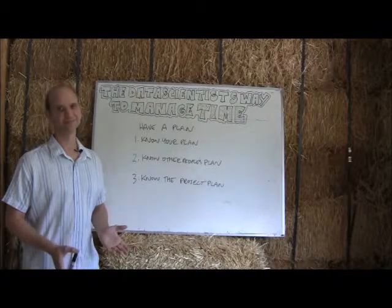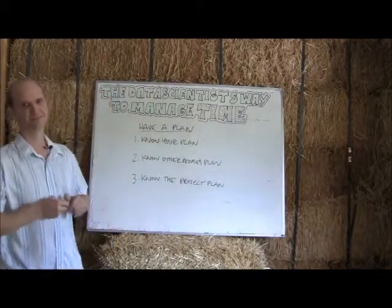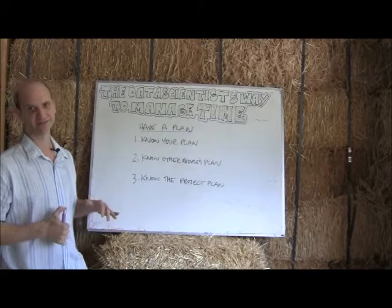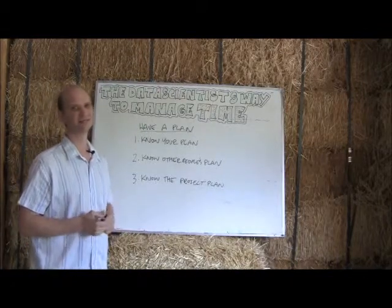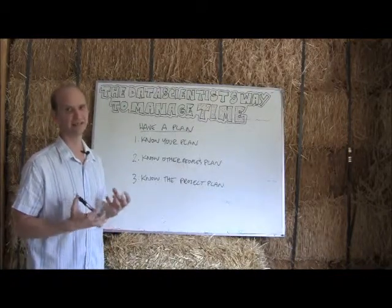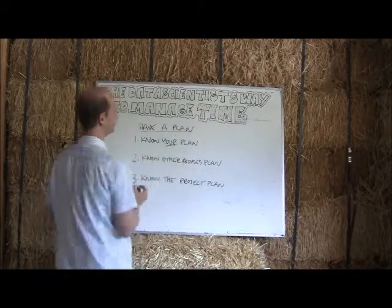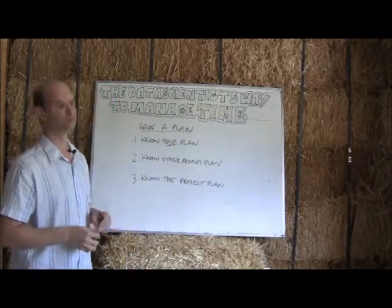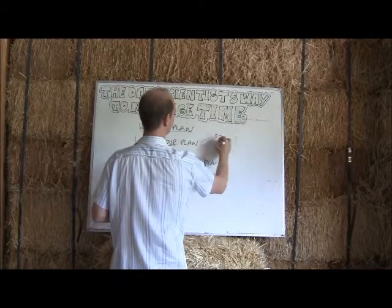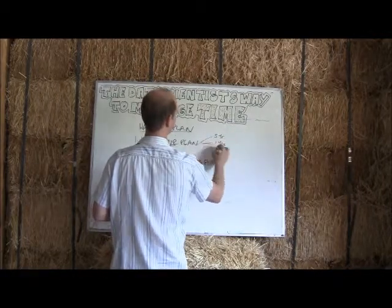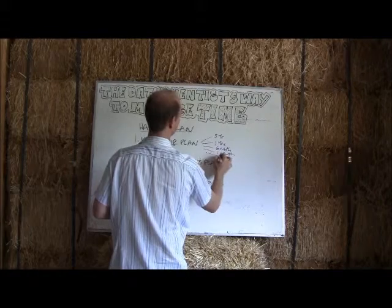So the first step is to have a plan. Before we get to the last step, there are two more important steps that I think are really critical as a data scientist to know before you can get a solid plan. Number one is to really know your plan — really know where you want to be and what you want to do. Typically this starts by looking at your five-year plan, your one-year plan, six-month plan, one-month plan, and a one-week plan.